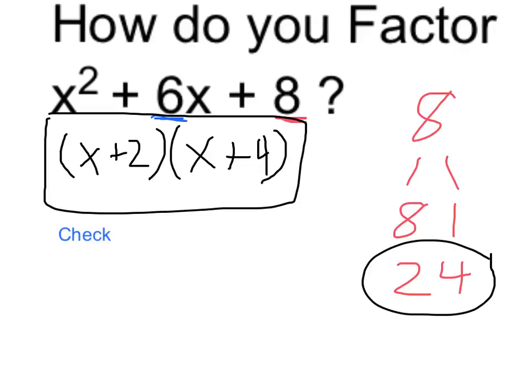But we can just check by foiling. x times x is x squared, then if I do x times 4, that's going to be equal to 4x, so it's x squared plus 4x, plus 2 times x, which is 2x, and finally 2 times 4, which is equal to 8. Now you can see why I needed to find factors 2 times 4, which added up to 8, because this 2 and 4 made that 8.